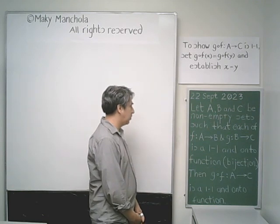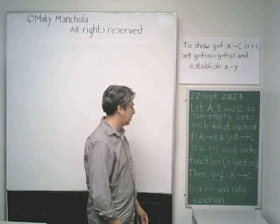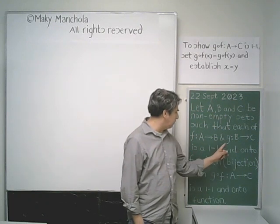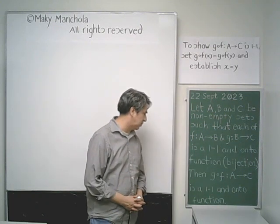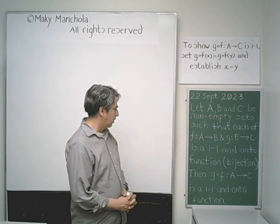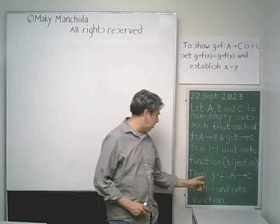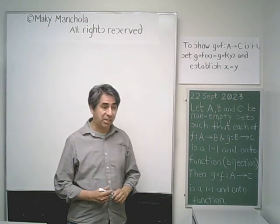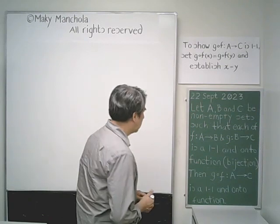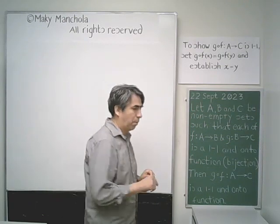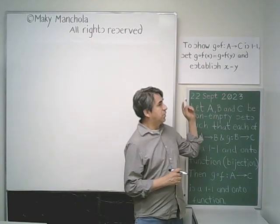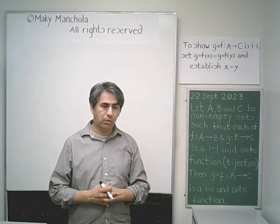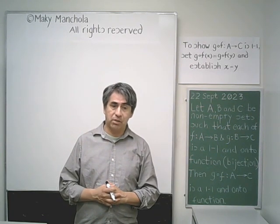Let A, B, C be non-empty sets such that each of the functions F from A to B and G from B to C are bijections. Our conclusion is that the composition G composed with F from A to C is also a bijection. In order to prove this, we are going to prove that G composed with F is 1-to-1, and also G composed with F is onto.